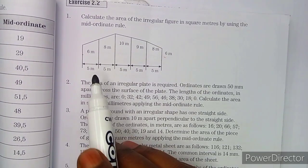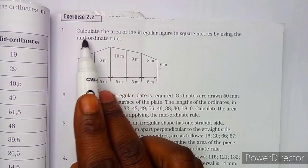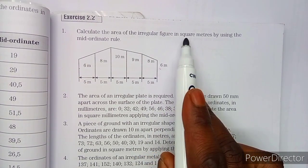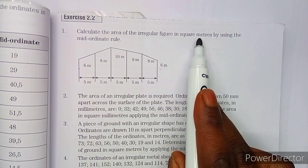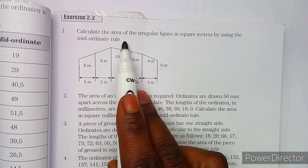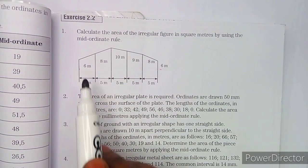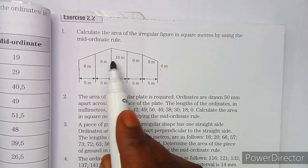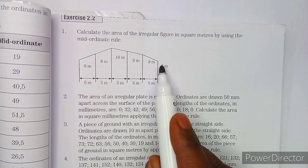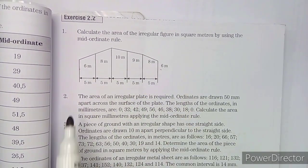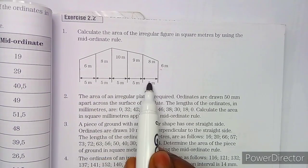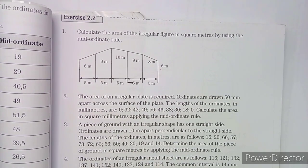Let me present the questions so we can see how to use this formula. You will be given a question like: calculate the area of an irregular figure in square meters by using the mid-ordinate rule. You may be given a diagram with ordinates: 6, 8, 10, 9, 8, 6. These are the ordinates. The equal spacing shown — 5, 5, 5 — is the distance between ordinates.